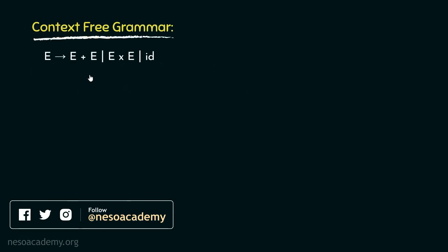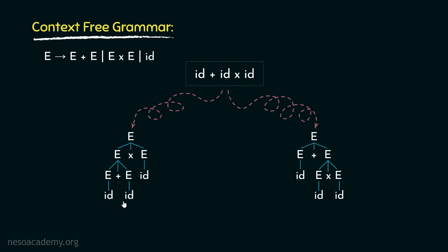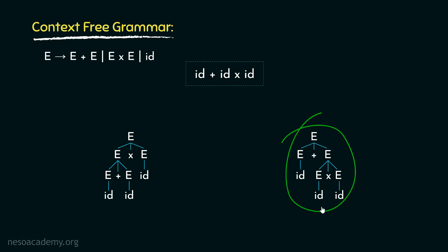During the session on ambiguity in CFGs, using these production rules, when we tried to derive the string id plus id into id, we observed two different parse trees for the same string. Then again, during the session on problems of ambiguity in CFGs, we learned that this parse tree only provides the correct outcome whereas this one is the incorrect one, as it leads to the precedence property violation.